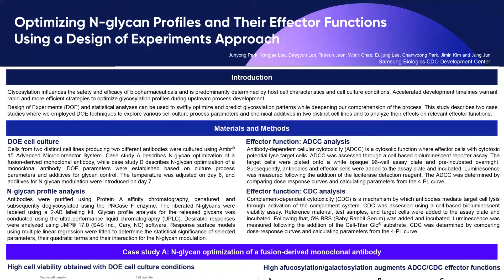Accelerated development timelines warrant rapid and more efficient strategies to optimize glycosylation profiles during upstream process development. Design of experiments (DOE) and statistical analyses can be used to swiftly optimize and predict glycosylation patterns while deepening our comprehension of the process.